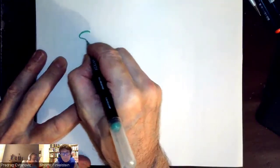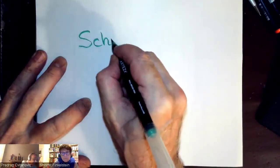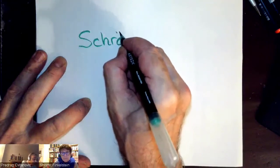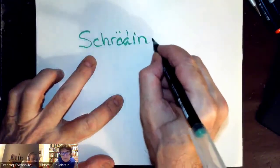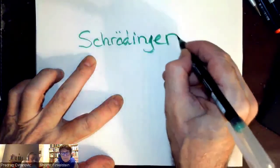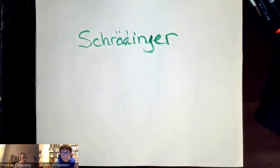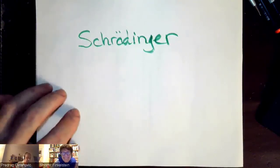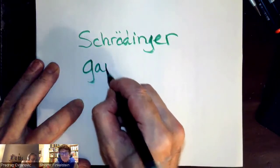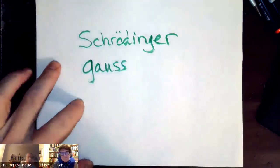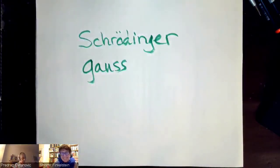There is this strange name, with strange letters, ü, like in the ice cream. Fake brands of expensive ice cream. This is called Schrödinger. And, you know, there is also Gauss. And Gauss is Gauss. Thank God, that's easy to pronounce.